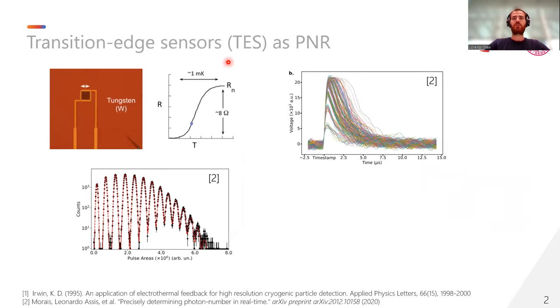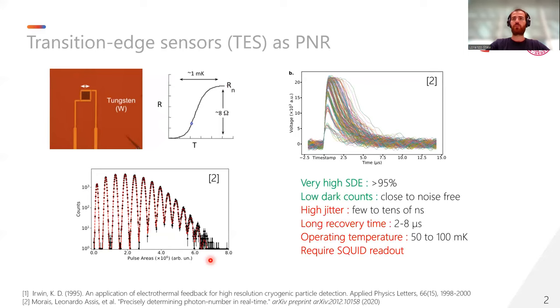Transition edge sensors have been proved to be an excellent PNR detector technology. They consist of a tiny slab of superconducting material which operates at the transition region between the superconductive and the resistive state. When photons are absorbed by the detector, a different voltage pulse shape will be produced, and by analyzing the area under the curve, it is possible to retrieve the photon number state. TES has been proved to possess very high efficiency and low dark count rate. However, they show several drawbacks.